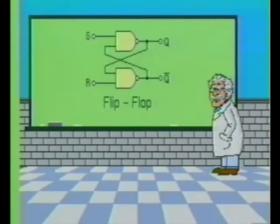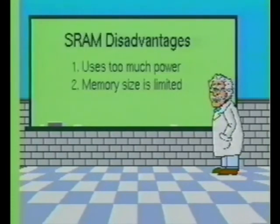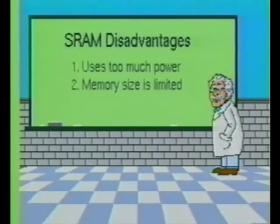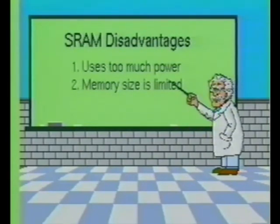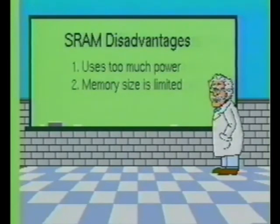The static RAM device uses flip-flops to store individual bits of information. The two major disadvantages of the static RAM device are: first, they dissipate too much power; and second, each flip-flop memory cell occupies a relatively large area on the IC, which limits the maximum number of cells available.